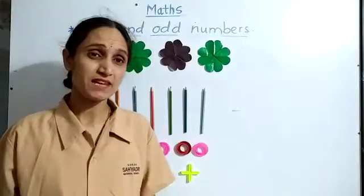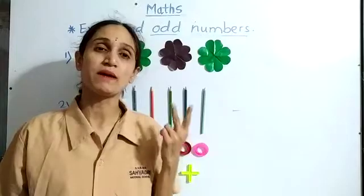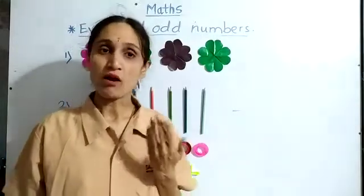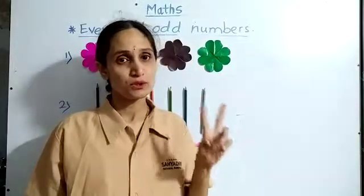What is meant by even numbers? Even number means the numbers which can be grouped by 2. And odd number means numbers which cannot be grouped by 2.